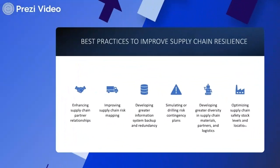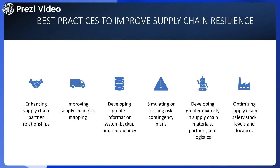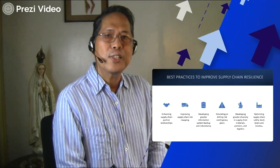The six best practices for supply chain resilience are: first, enhancing supply chain partner relationships; second, improving supply chain risk mapping; third, developing greater information system backup and redundancy; fourth, simulating or drilling risk contingency plans; fifth, developing greater diversity in supply chain material partners and logistics; and sixth, optimizing supply chain safety stock levels and locations.